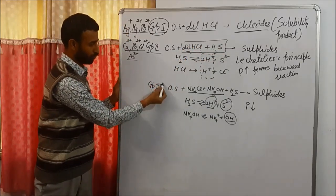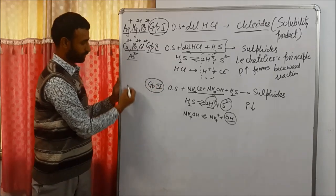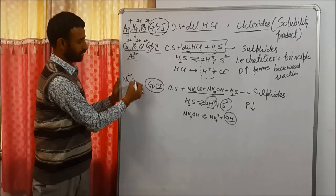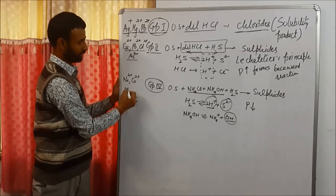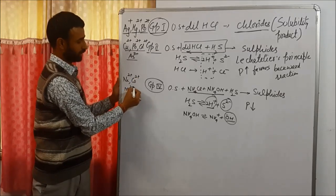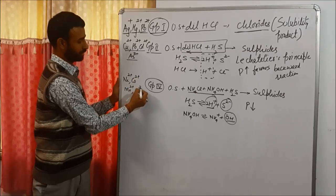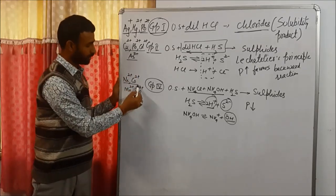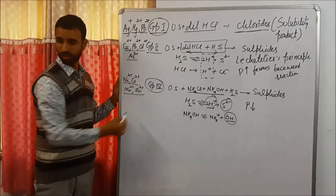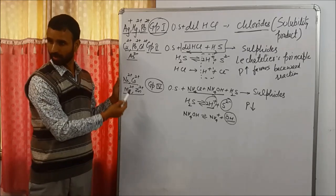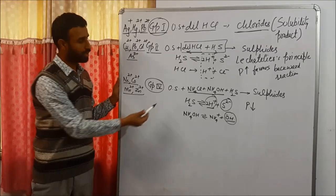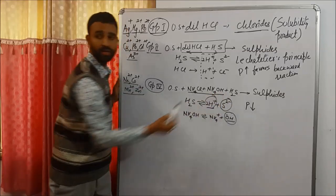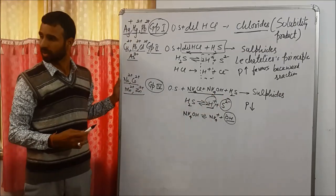For group 4, the ions are nickel, cobalt, manganese, and zinc. These can be remembered as 'NECO' — nickel, cobalt — plus manganese. The group reagent is ammonium chloride, ammonium hydroxide, and H₂S.